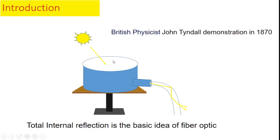यह एक बरतन है जिसमें water भरा हुआ है और यह light source है। जब light source इस बरतन पर पड़ती है, तो इस बरतन में एक hole है जिससे water stream बाहर निकलती है। Light source इस hole से बाहर निकलता है और इस water stream के साथ travel करता है। इस stream की boundary पर total internal reflection की द्वारा light bend होती है — और इस प्रकार light rays water stream से बाहर escape करती हैं, जिससे water stream luminous दिखती है। Light rays is confined in this water stream, and this is the basic idea of total internal reflection which helped in the development of optical fiber.